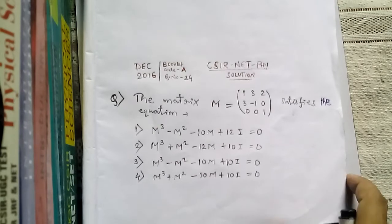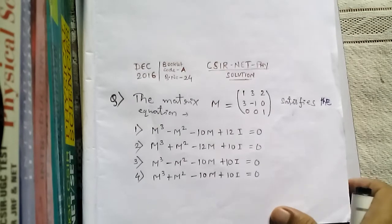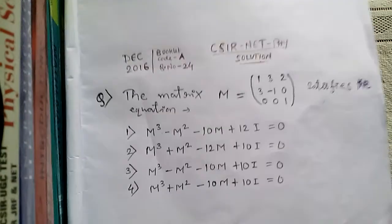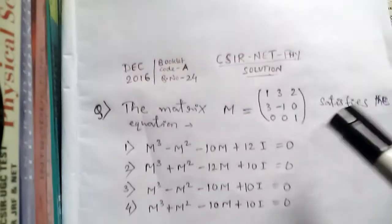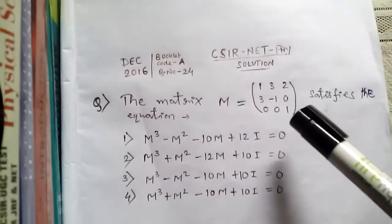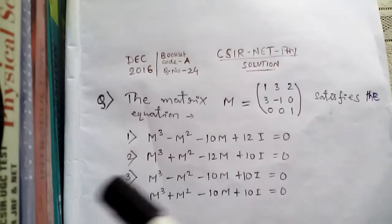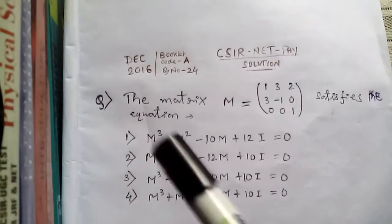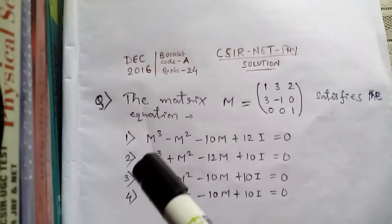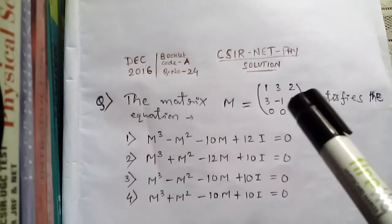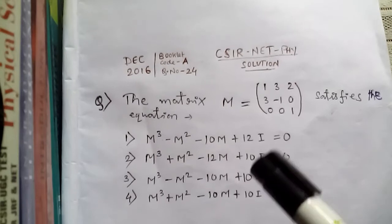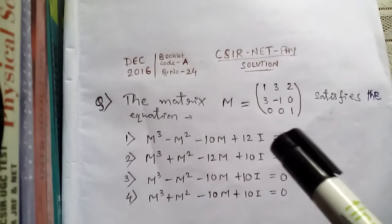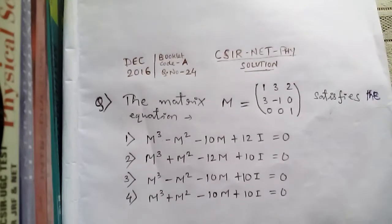It says: the matrix M satisfies which equation — option 1, 2, 3, or 4. Each equation contains M (the matrix itself) and I, where I is the identity matrix.